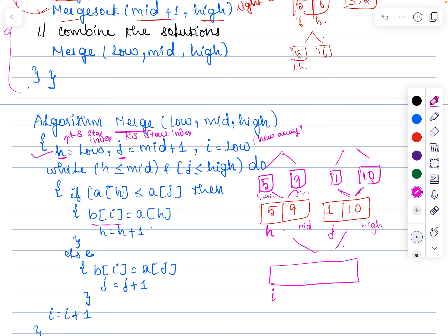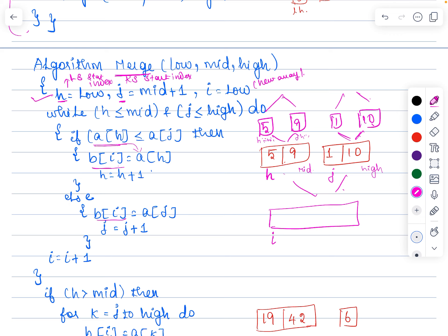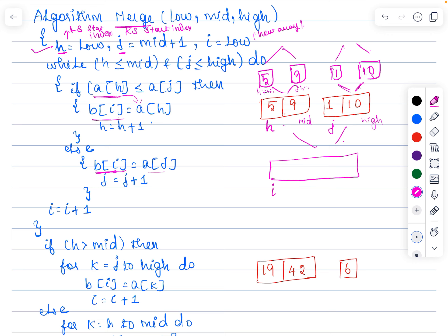If array[h] is lesser, write array[h] into the new array. If array[j] is lesser, go to the else part and write array[j] into b[i]. Whichever is lesser is written into the new array b. Once written, if you wrote h you increment the h pointer; if you wrote j you increment the j pointer. You also increment the i pointer so that the next value can be copied into the new array.